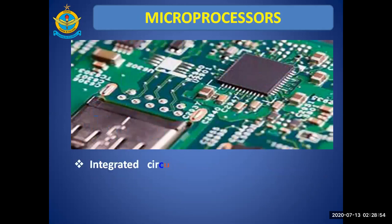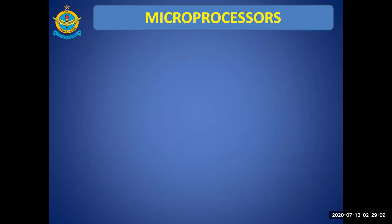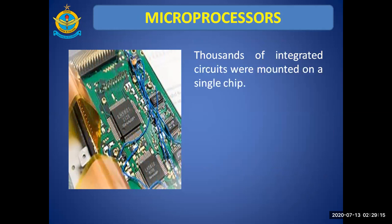Integrated circuits led to the invention of the microprocessor, which is the basis of many modern devices and gadgets that we use nowadays. Microprocessors were invented in the 1970s. Thousands of integrated circuits were mounted on a single chip — that single chip was called the microprocessor.